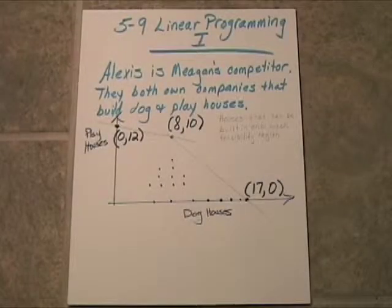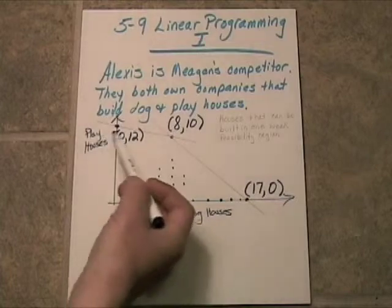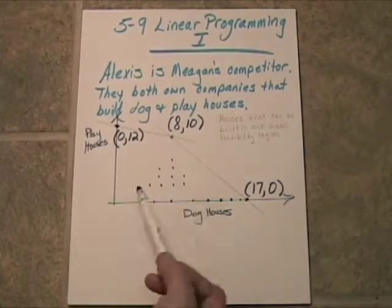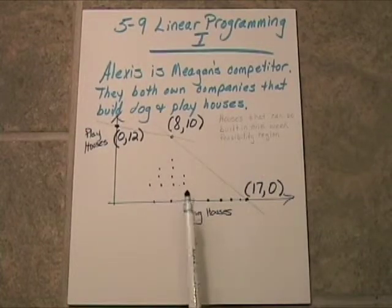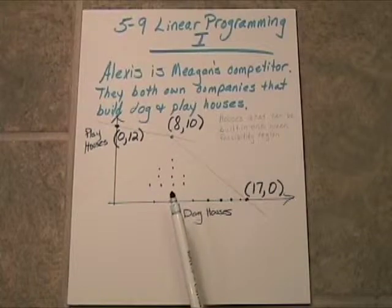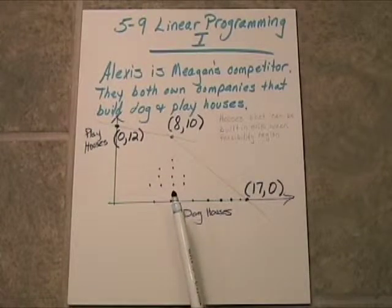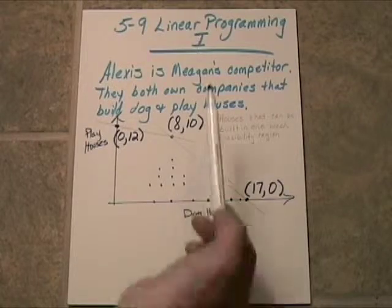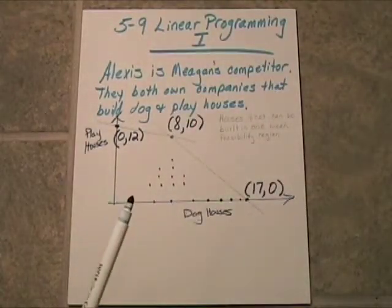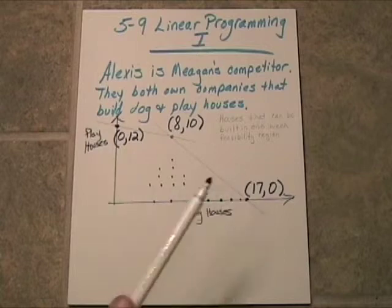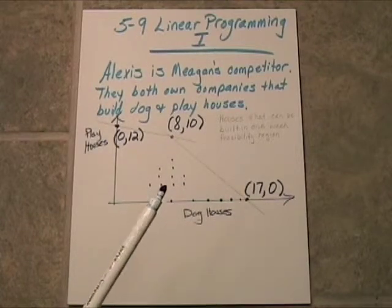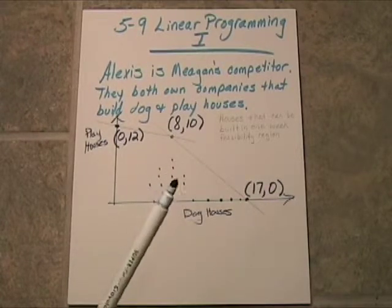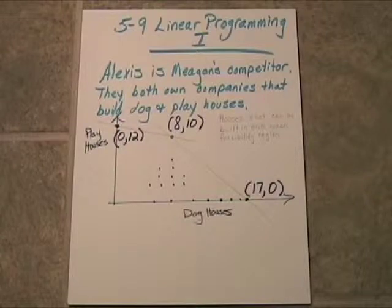Now, Alexis is a businesswoman. And she knows that there are a lot of different combinations of building that can be done here. She doesn't want to do it haphazardly. She really wants to maximize her profits. So she's going to do a bit of what we call linear programming. She's going to take a look at this region and compare it with her profit chart. So let's take a look at her profits.